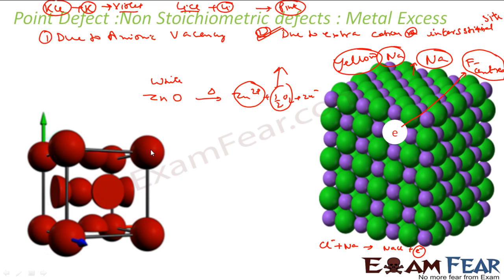So what will happen is this, this will become interstitial side, and electron also to neighboring somewhere. So with this if you see, it will have excess of zinc.